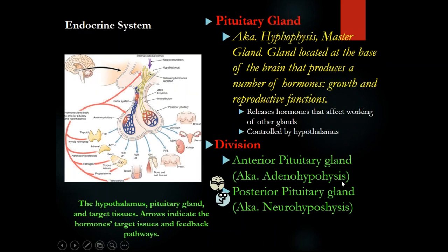The anterior pituitary gland — adenohypophysis — has six hormones, remembered as G-P-TAL-F. G: growth hormone — target organ muscles and bones, function is growth. P: prolactin — target organ breast, produces milk. T: TSH (thyroid stimulating hormone) — produced by the anterior pituitary, stimulates the thyroid gland to produce T3 and T4, which create energy. A: adrenocorticotropic hormone — stimulates the adrenal cortex to produce aldosterone, sex hormones, and cortisol.